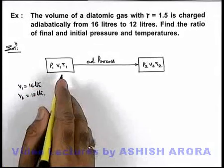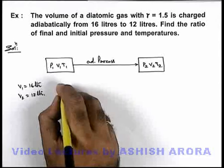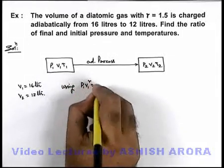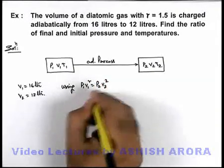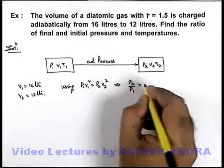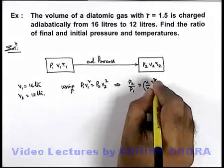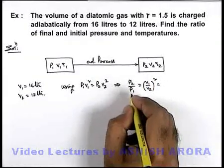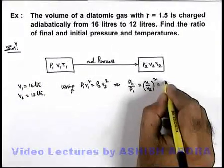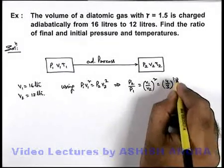Now we can easily relate by using the relation among thermodynamic coordinates for adiabatic process. Using p1 v1 gamma is equal to p2 v2 gamma, this will give us p2 by p1 is equal to v1 by v2 to power gamma. If we substitute the values of v1 and v2 it is 16 by 12, which can be written as 4 by 3 to power gamma, and here gamma is given as 1.5.